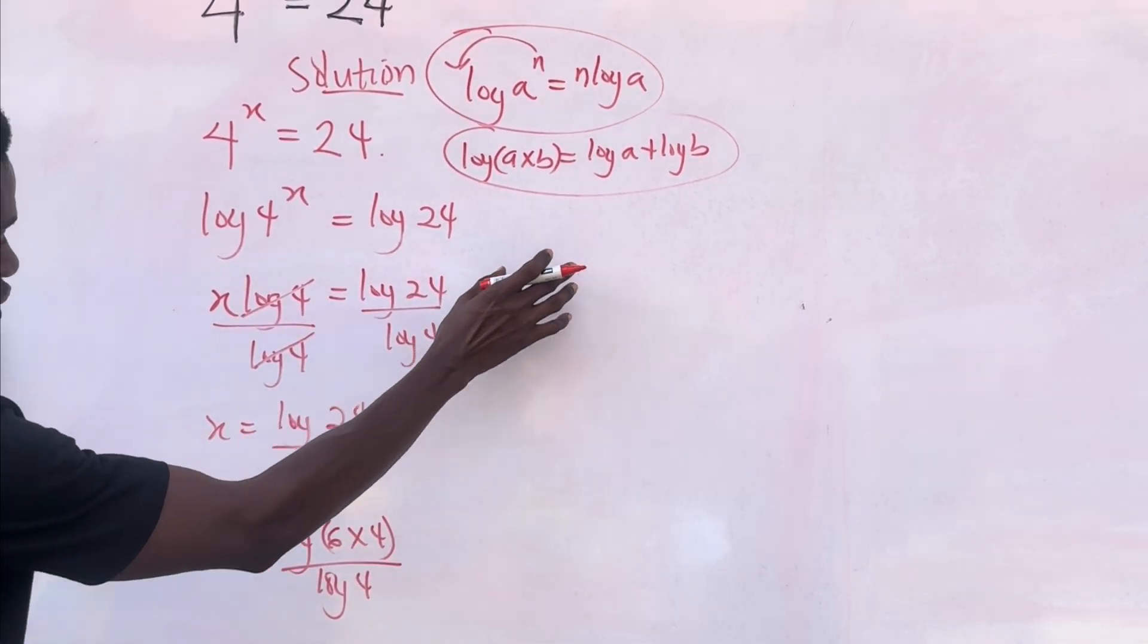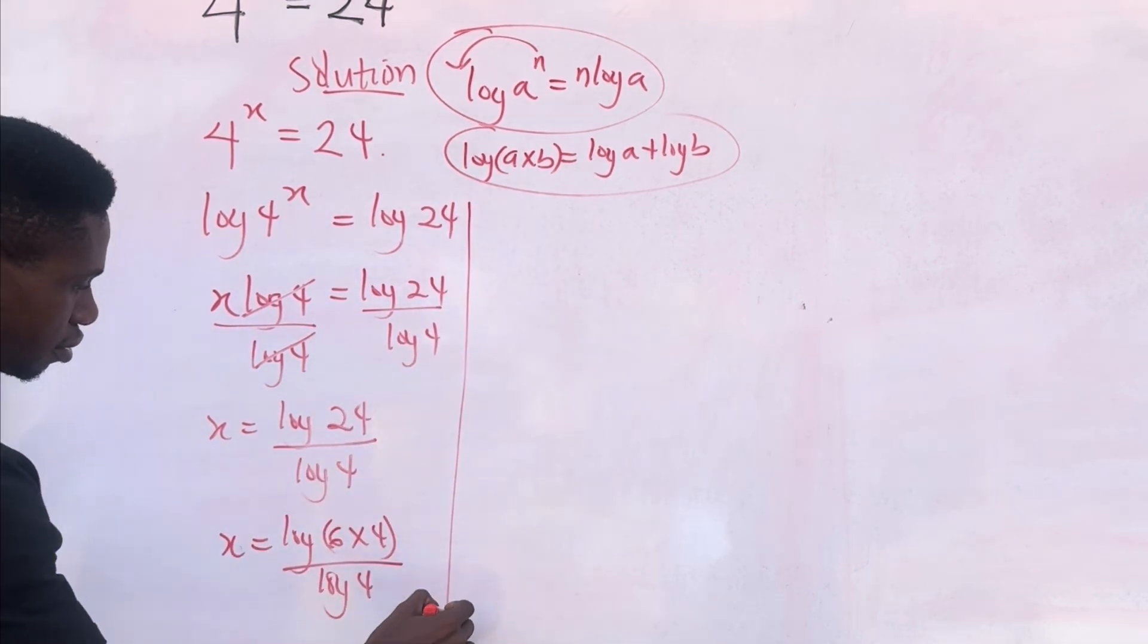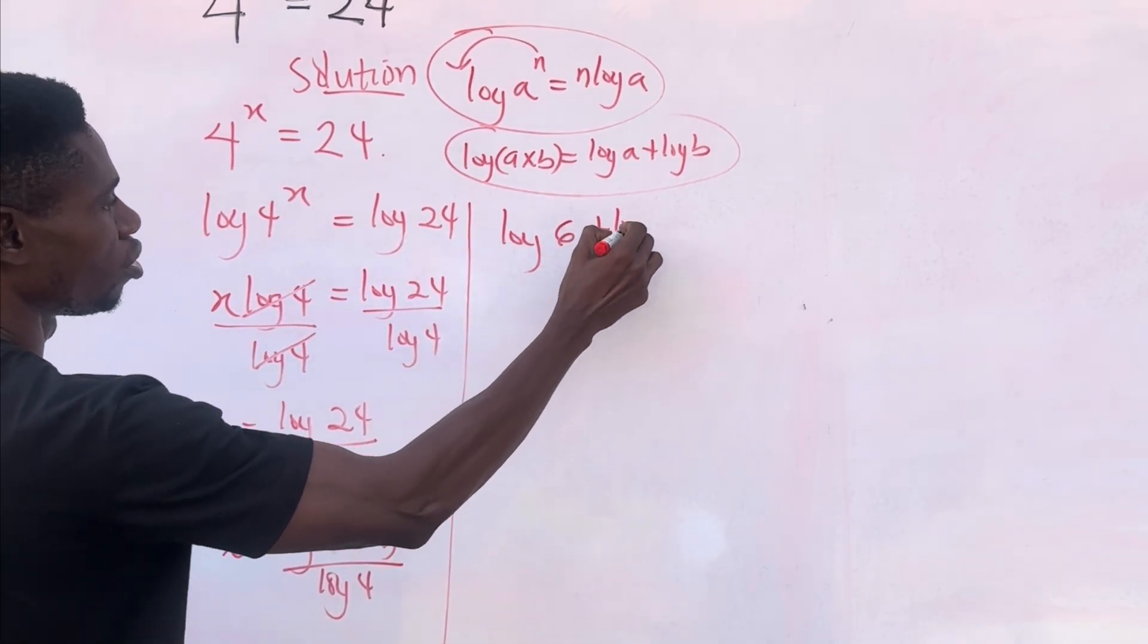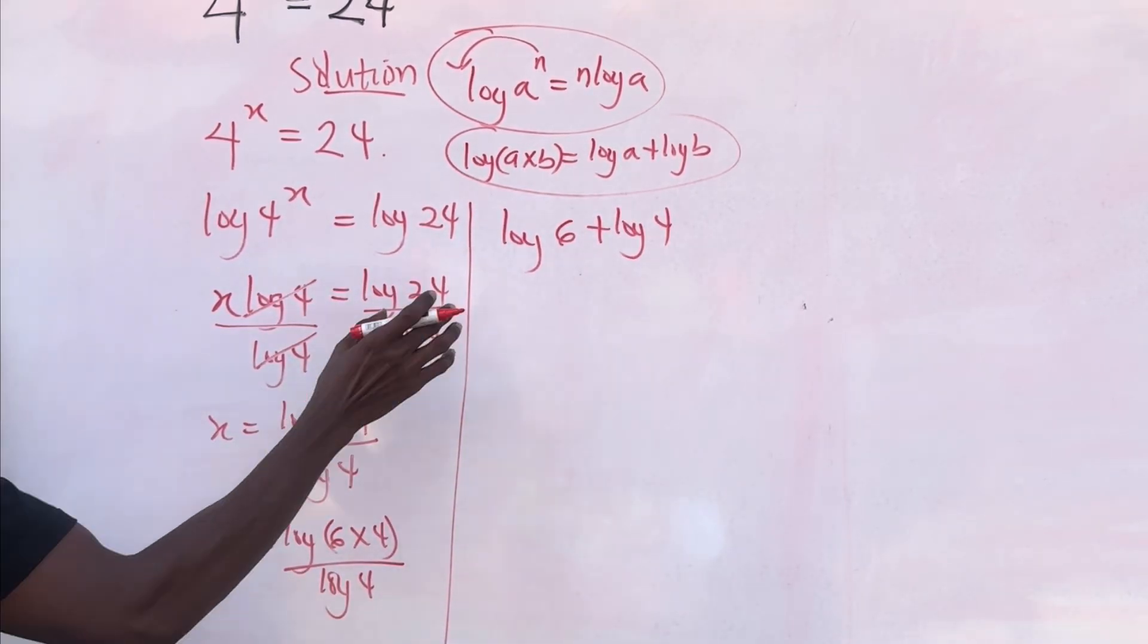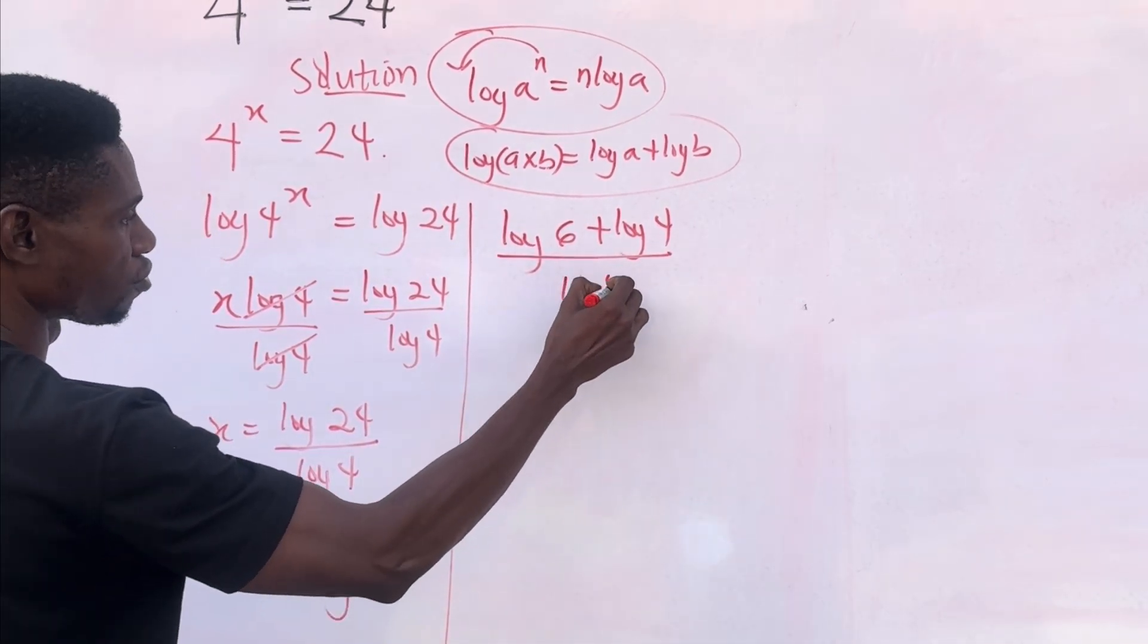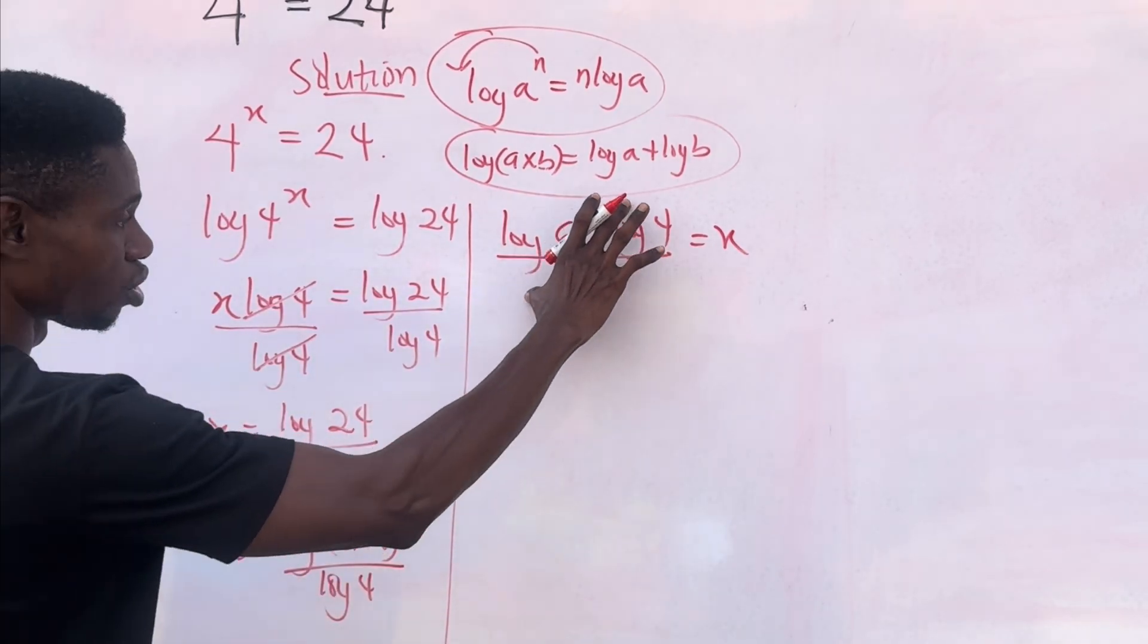So this can be written as log 6 plus log 4 following this law over log 4. Remember, that's our x. Our x equal to all of these.